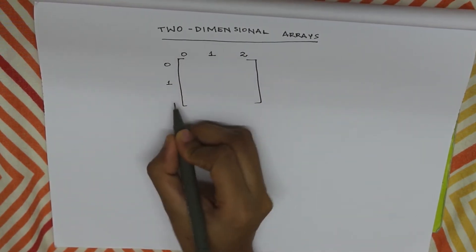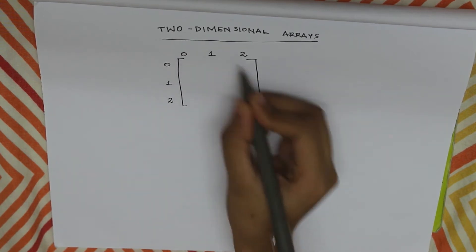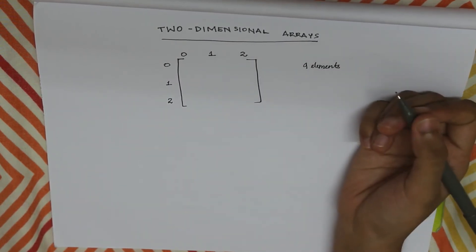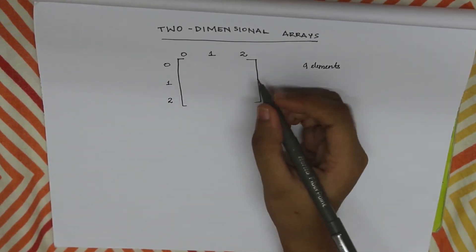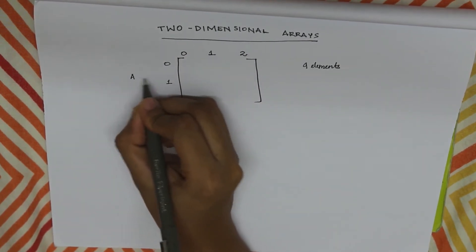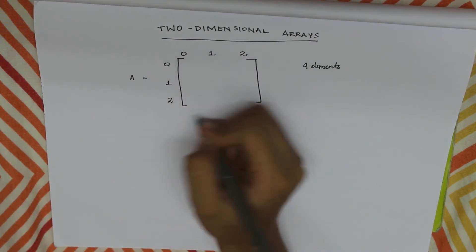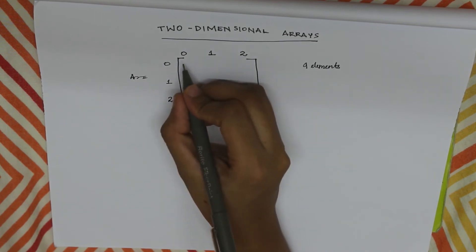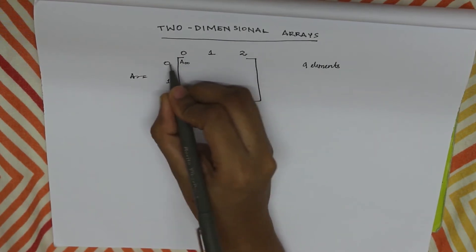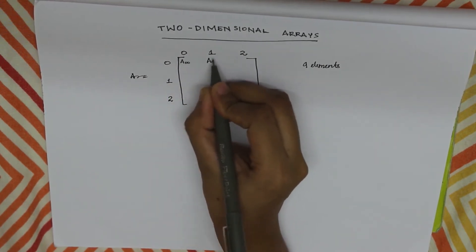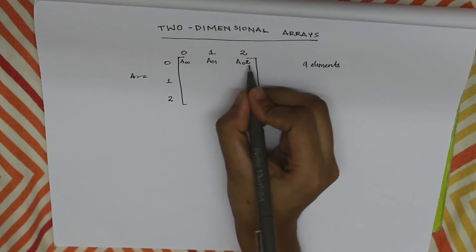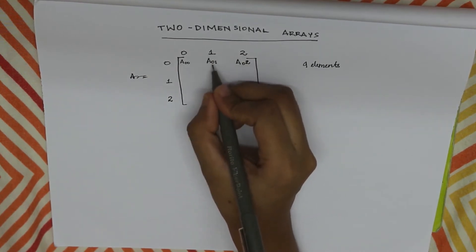Okay, zero, one, two. How many elements are there in total? We have nine elements. This is how I learned the matrix. This is a two-dimensional array. This is one element: A of zero, zero — zero row, zero column. Zero row, first column. Zero row, second column — I mean third column. Not first column, this is second column, third column.